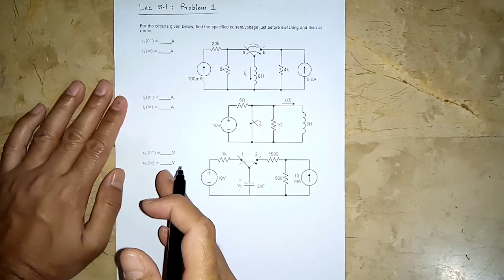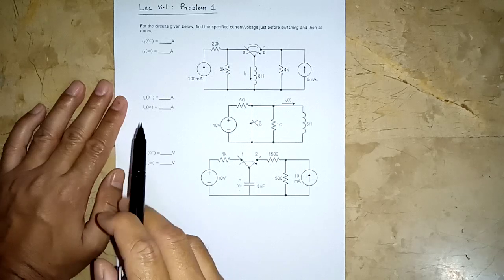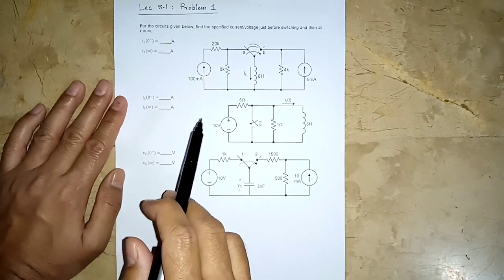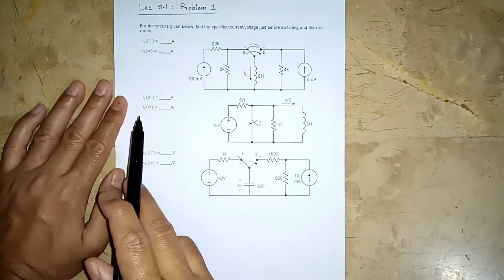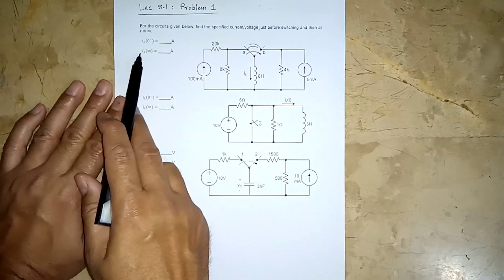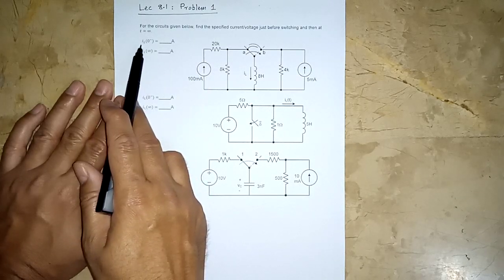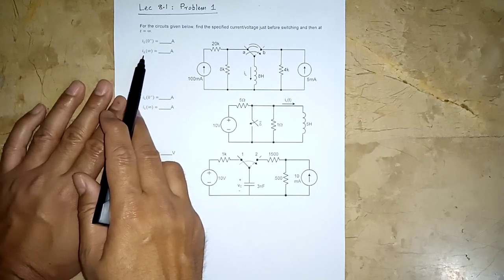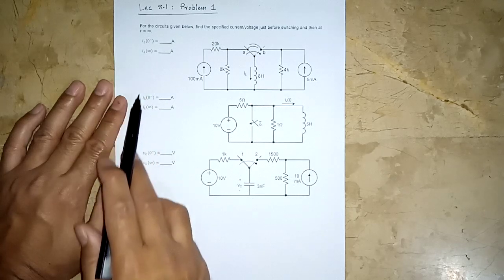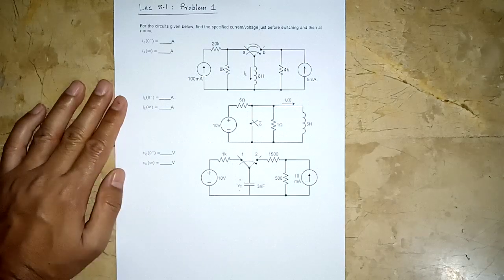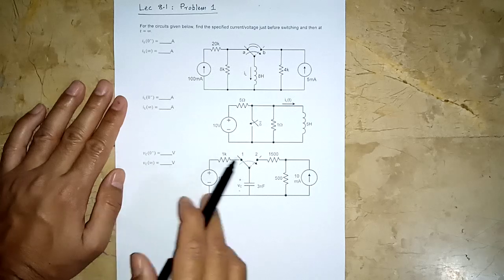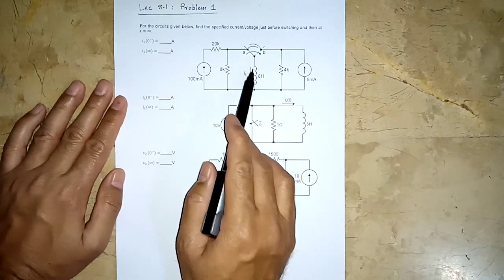The question says: for the circuits given below, find the specified current or voltage just before switching and then at t equals infinity. In the first circuit we have to find the inductor current just before switching, assuming switching takes place at t equals zero. In the second, similarly the inductor current. And in the third, we have to find the voltage across the capacitor just before switching.